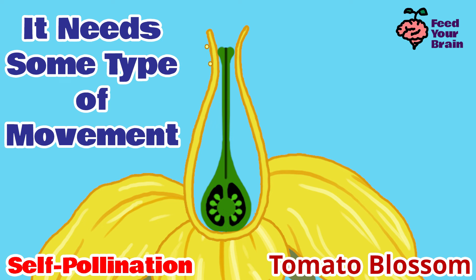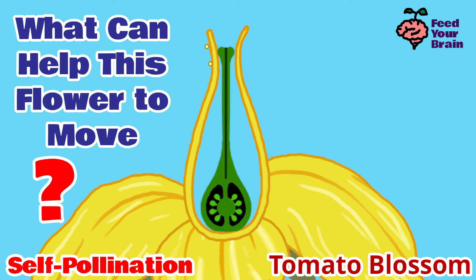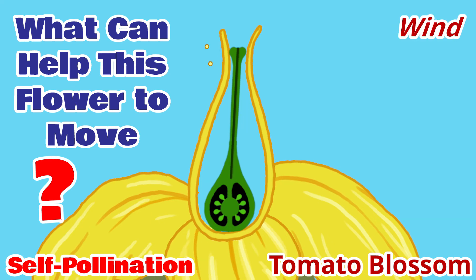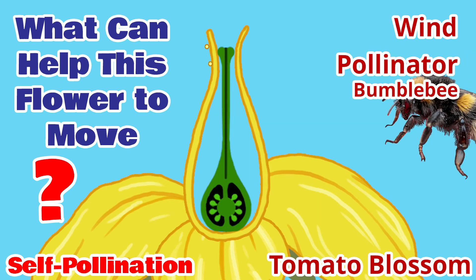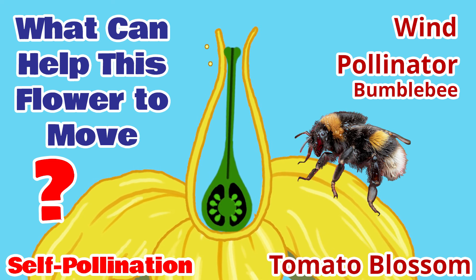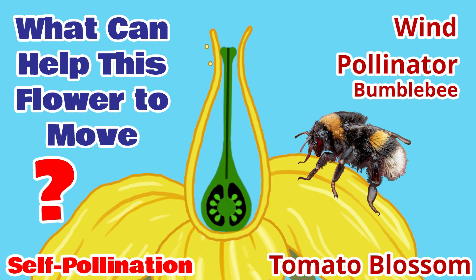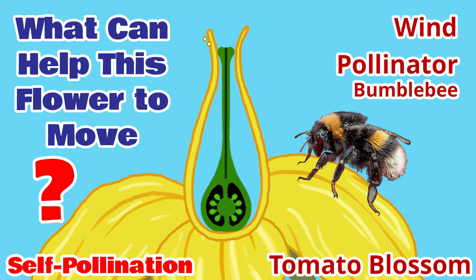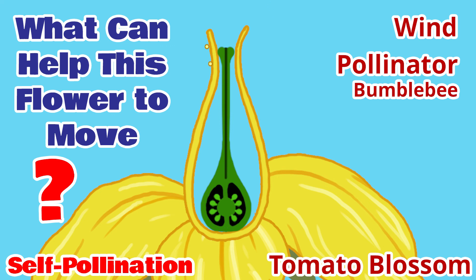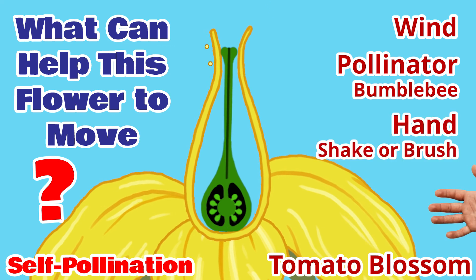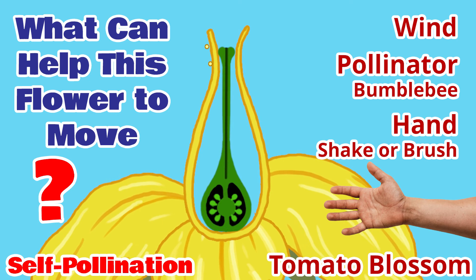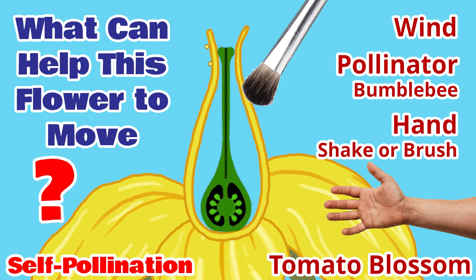So what is best for this self-pollinating flower? This flower needs some type of movement. It can be the wind if the plant is outside. It can also be a pollinator such as a bumblebee — the bumblebee's wings vibrate on the tomato blossom, causing the staminal cone to vibrate and releasing the pollen from the anther cone. Another way is for a hand to shake it — you could shake or flick the flower, or brush the pollen around with a soft brush.